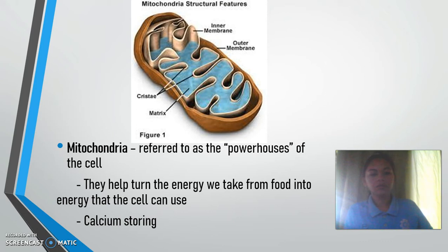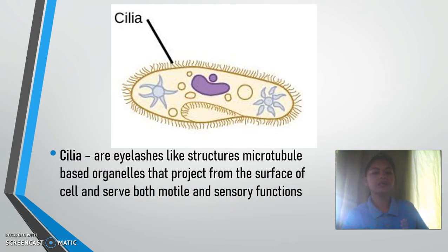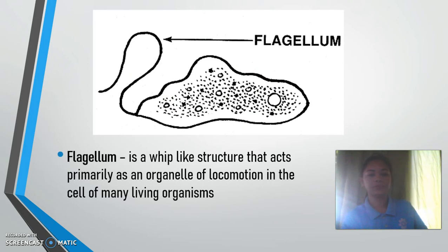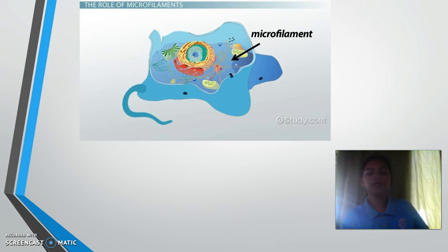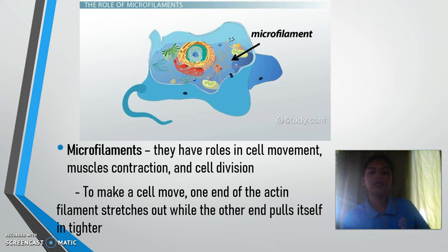Mitochondria are referred to as the powerhouses of the cell; they help turn the energy we take from food into energy that the cell can use, and are involved in calcium storage. Cilia are eyelash-like structures, microtubule-based organelles that project from the surface of the cell and serve motile and sensory functions. The flagellum is a whip-like structure that acts primarily as an organelle of locomotion in the cells of many living organisms. Microfilaments have roles in cell movement, muscle contraction, and cell division; one end of an actin filament stretches out while the other end pulls itself in tighter to make a cell move.